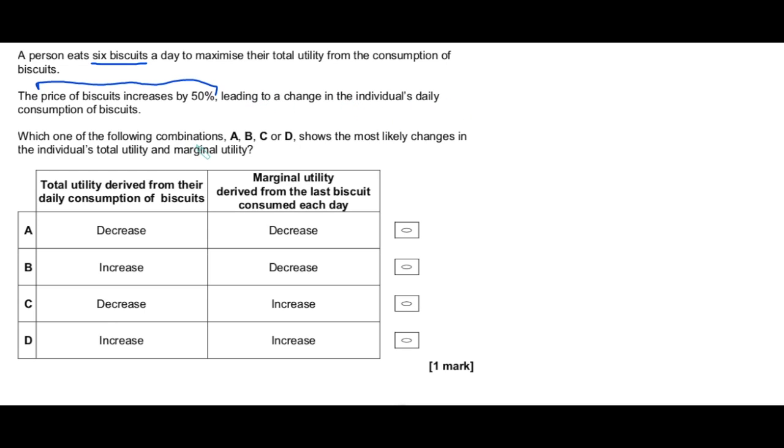Right. What's the question saying? Which one of the following options shows the most likely changes in individual's total and marginal utility? So I'm thinking, right, underline that. The focus is on both total and marginal utility. Now in the exam hall, there's me thinking total and marginal utility. What's the change? I know what these curves look like. And I know that if I show the change in price, it's going to give me the answers. So let me draw. Let me draw these curves. I'll do a quick sketch in the exam hall.